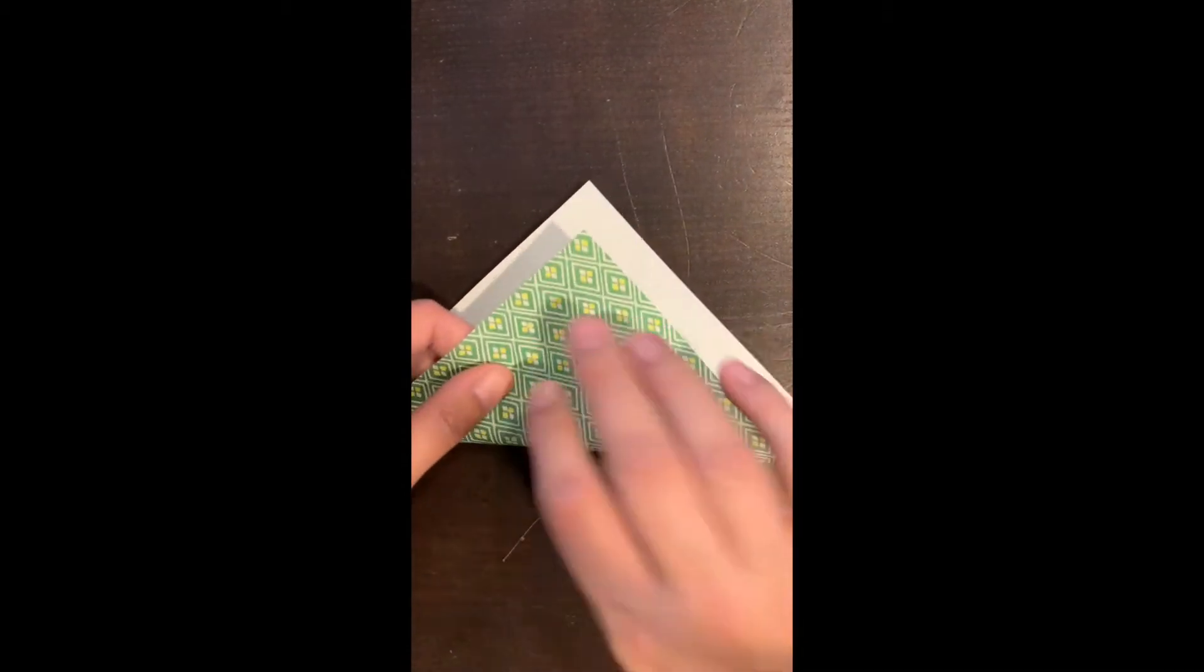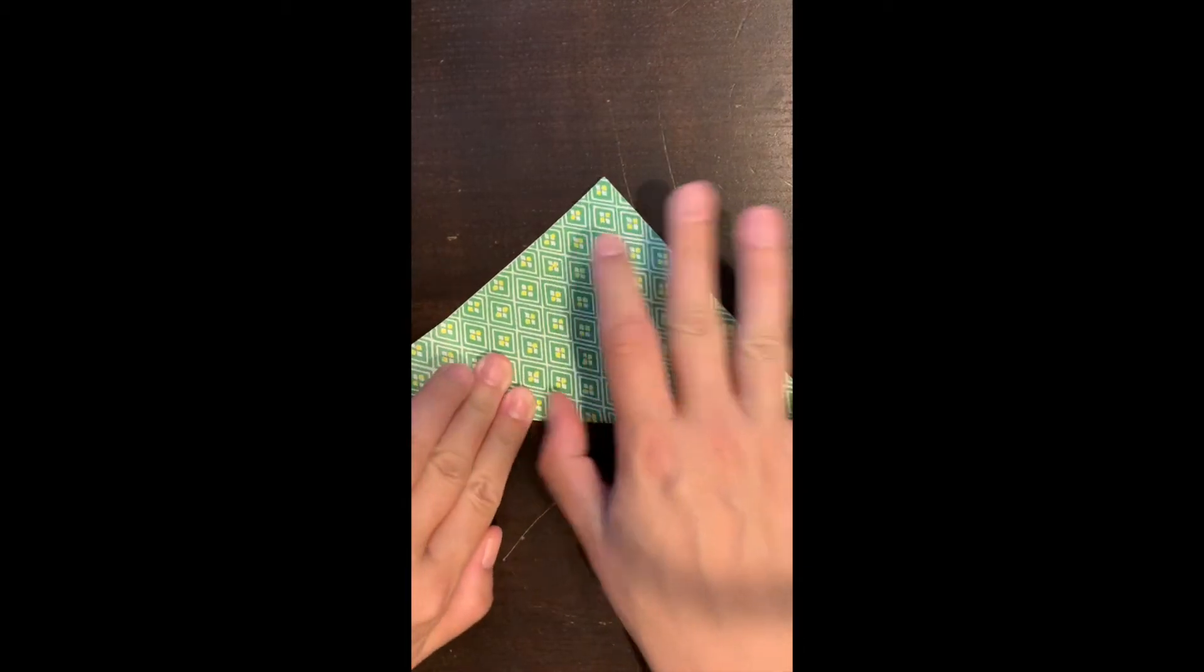We're going to start with the bottom corner, fold it up to the top corner, and make a triangle.